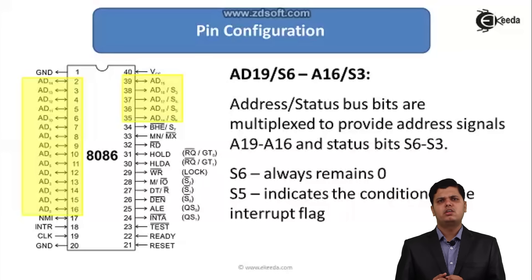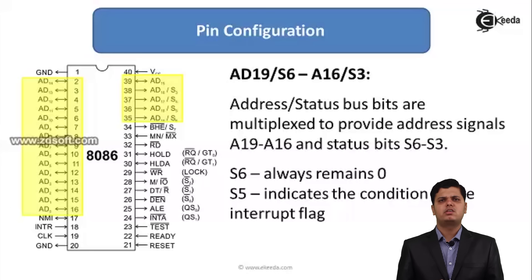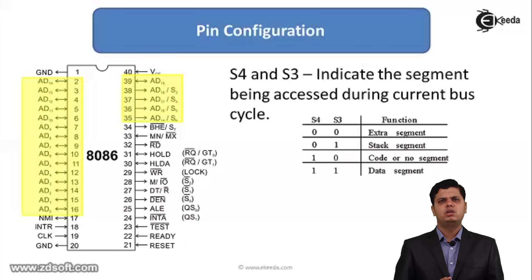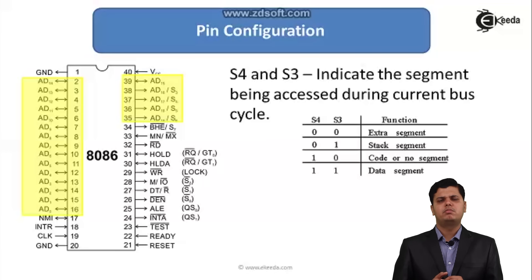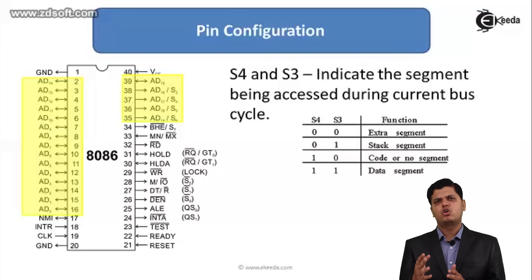There are 4 status signals: S6, S5, S4, and S3. S6 always remains 0. S5 indicates the condition of the interrupt flag, whether it is enabled or disabled. The combination of S4 and S3 indicates which segment of memory is currently being accessed. When S4 and S3 are 0-0, the extra segment is accessed; 0-1 means the stack segment; 1-0 means the code segment; and 1-1 means the data segment is being accessed.